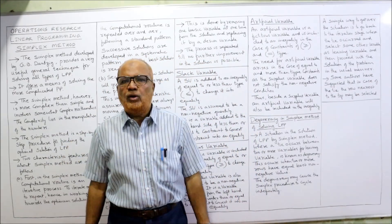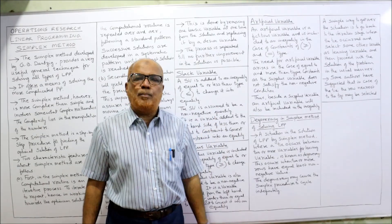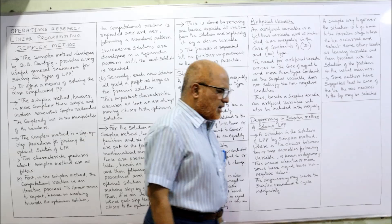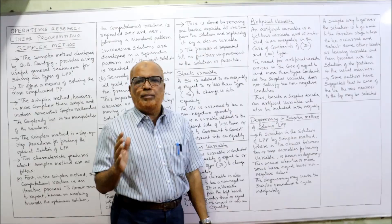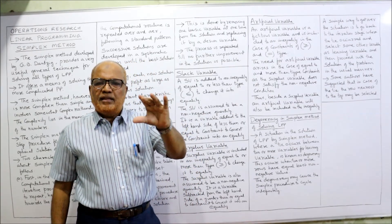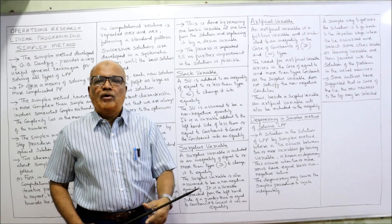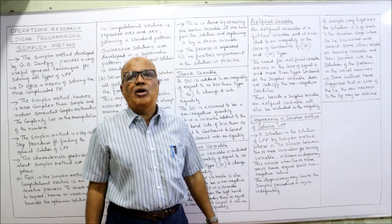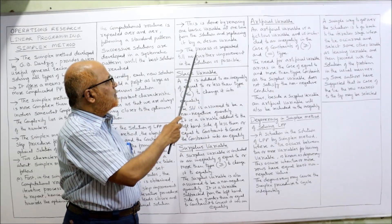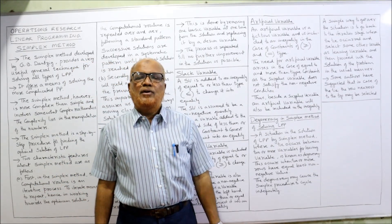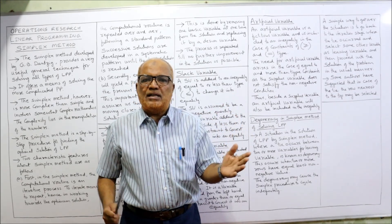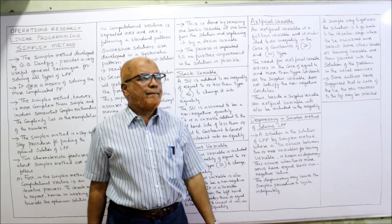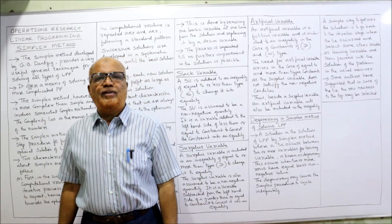The improvement is done by removing one basic variable at a time from the solution and replacing it with another variable. If the first table's solution is not optimum, we remove one variable and include another — one basic variable is removed and one decision variable is included. This process is repeated until no further improvement in the solution is possible. Once we reach the optimum solution, that is the end of the problem.